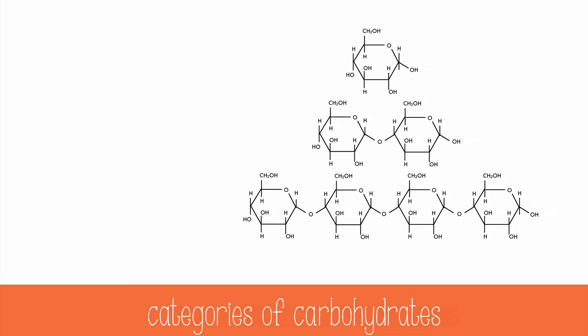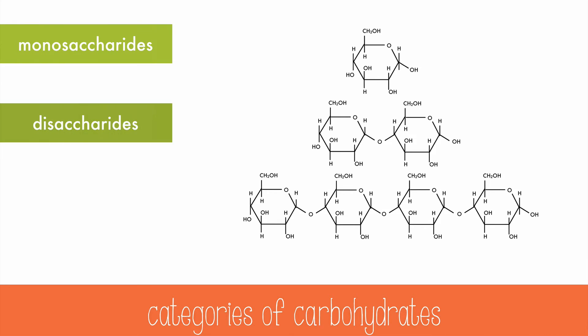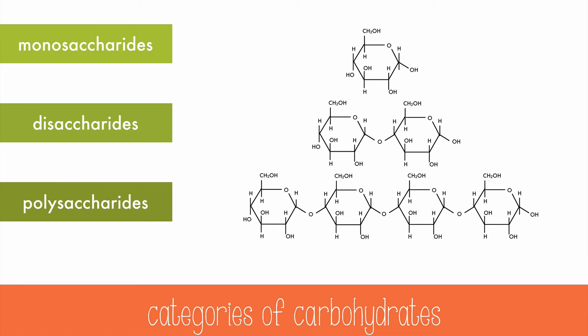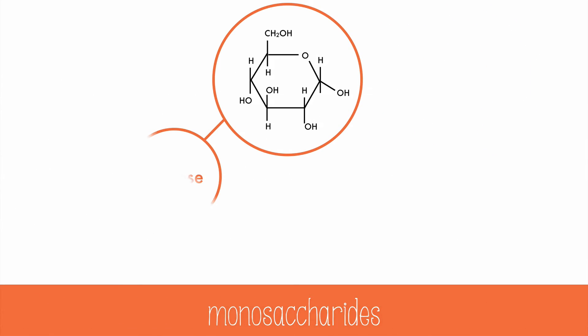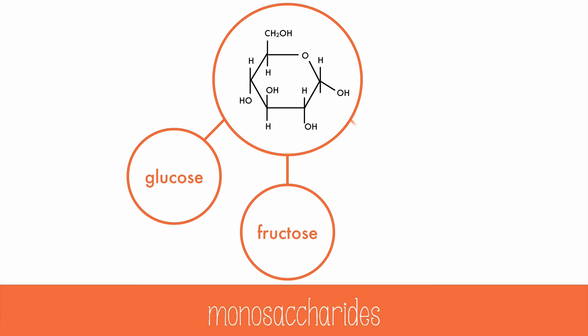Carbohydrates can be broken into three basic categories: monosaccharides, disaccharides, and polysaccharides. Monosaccharides are the base unit, the building block, or monomer, of carbohydrates. Monosaccharides include glucose, fructose, and galactose. These are the simplest of the sugars.